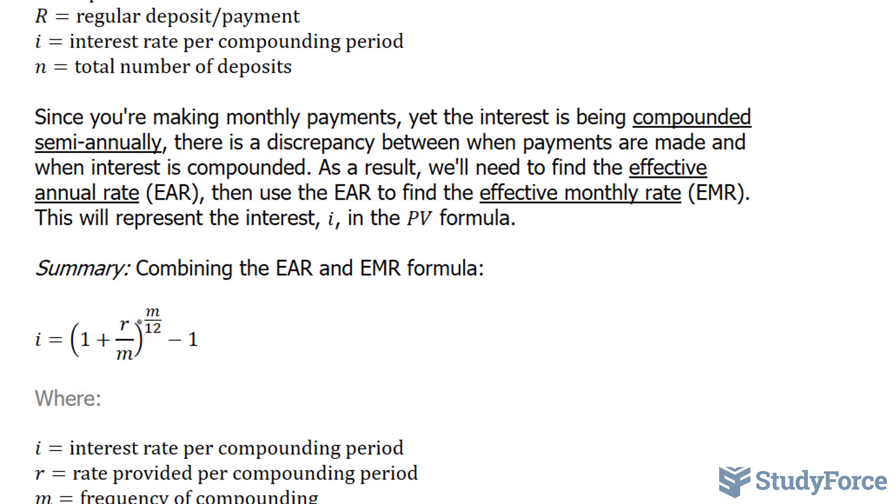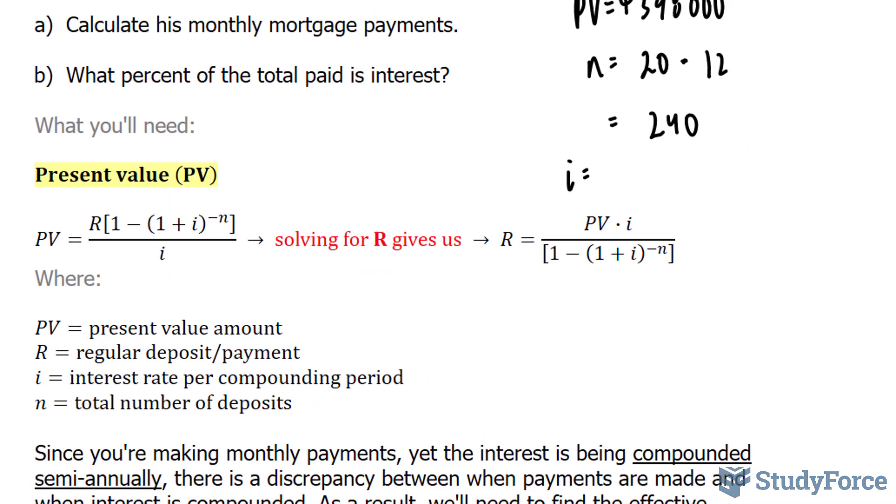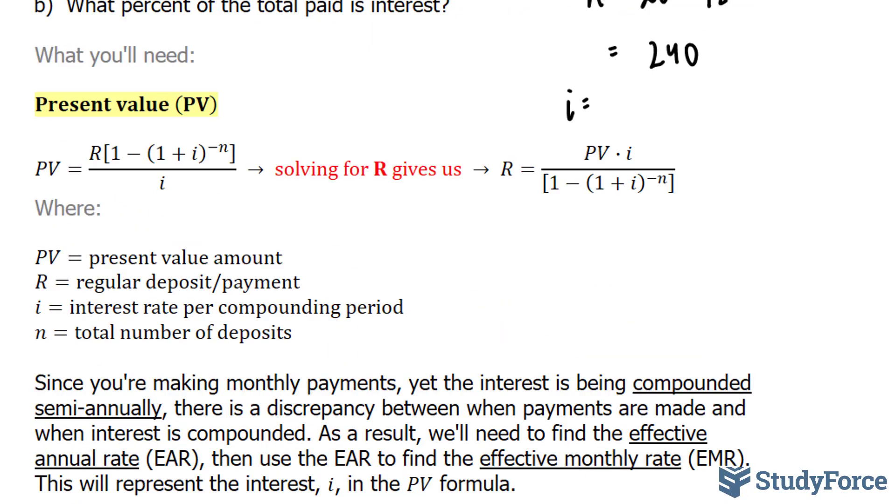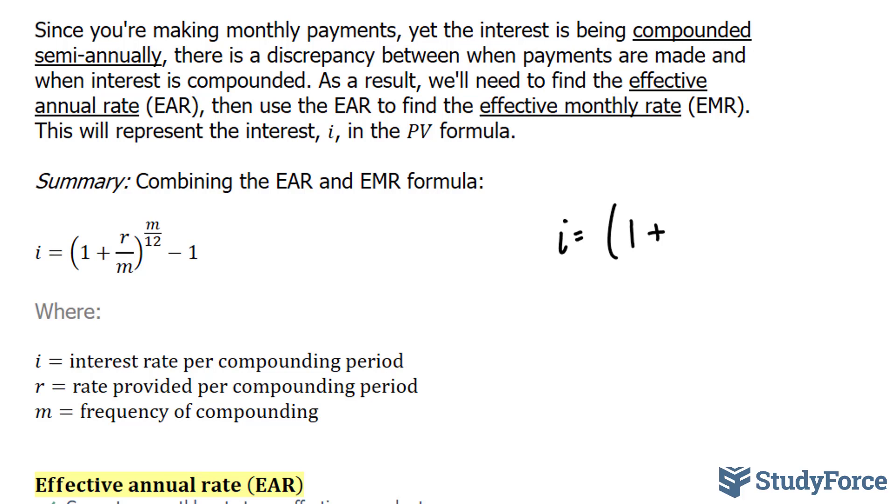R represents the rate that has been provided, M represents the frequency, and that's all you need for this formula. So i is equal to 1 plus the rate, which happens to be 4.3%. We're not going to use percentage here. We're going to use the decimal version of 4.3%, which is 0.043. M represents the frequency of compounding. It is being done semi-annually, which means twice a year. So therefore, M is equal to 2, 2 over 12 minus 1.